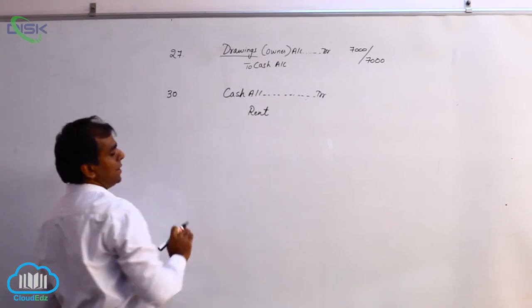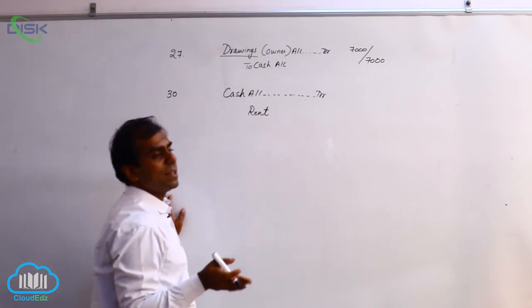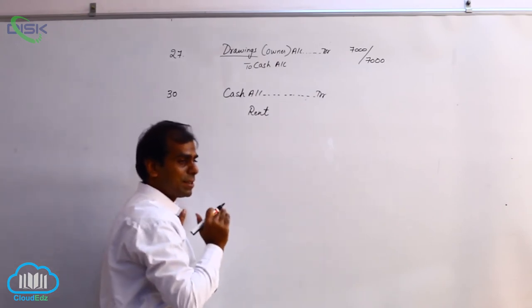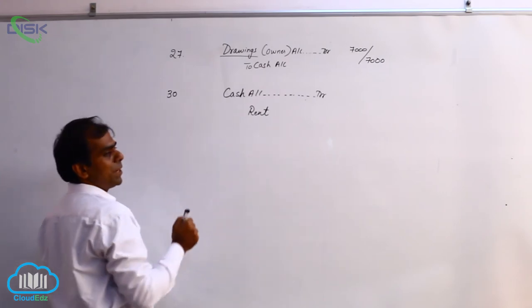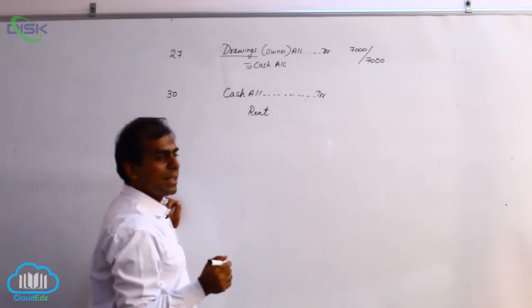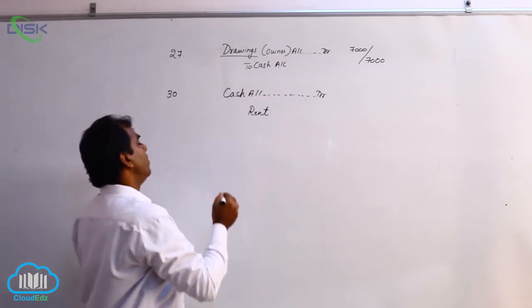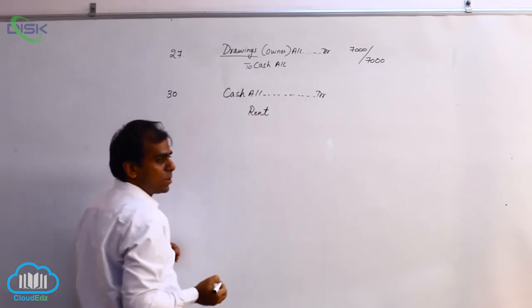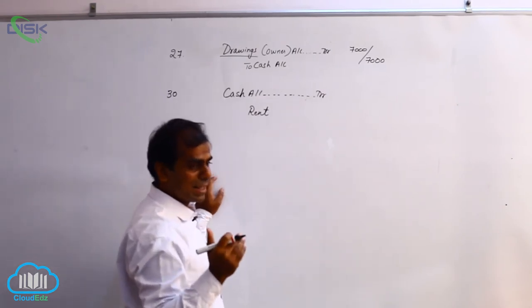You are getting this rent for a service given by you, which is nothing but shelter. It is an income for you because you get it periodically, that is every month. It is a nominal account, and in a nominal account you have expenses and incomes.